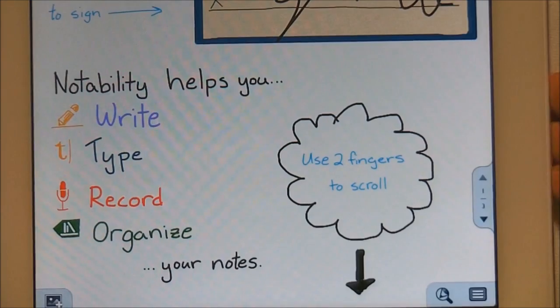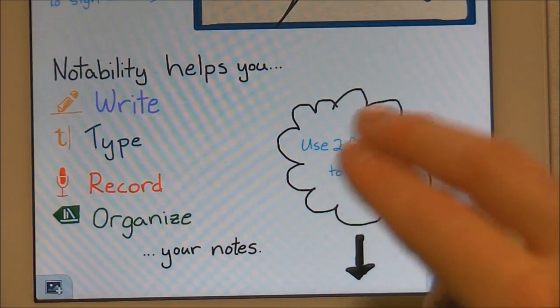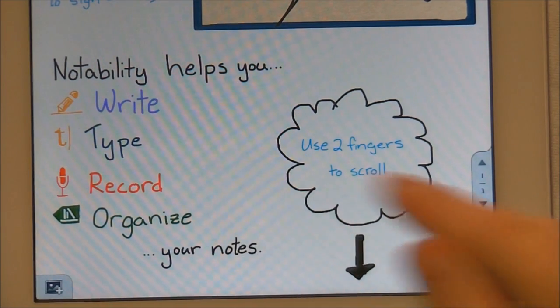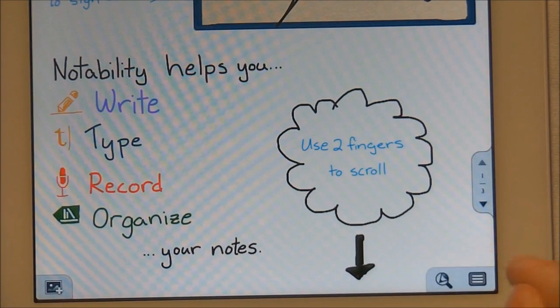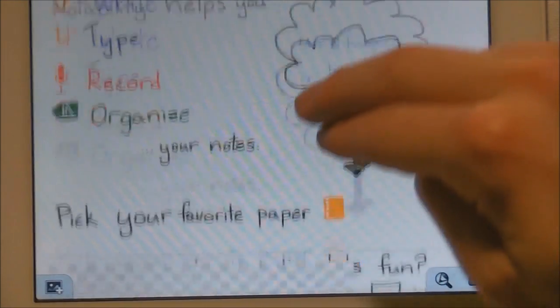So you can write, type, record, organize your notes. Use two fingers to scroll. This is something different than in penultimate. In penultimate you just take the bottom corner of your iPad and switch to go to different pages. But in this app you use two fingers to scroll to the next page.